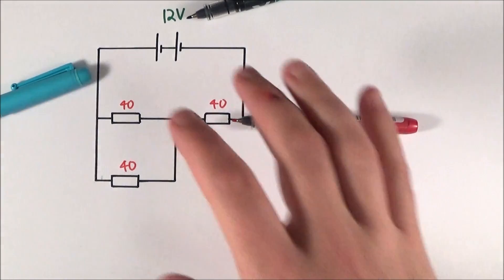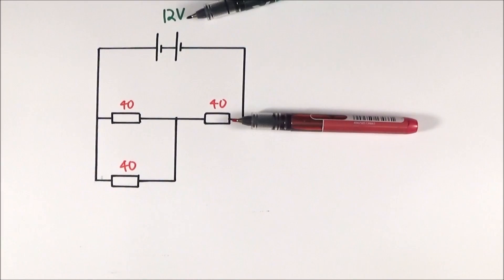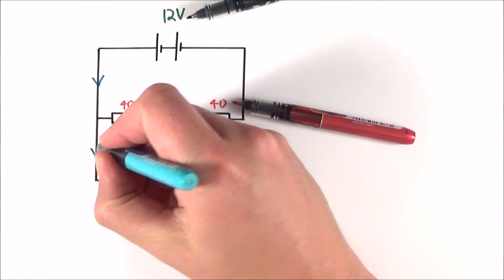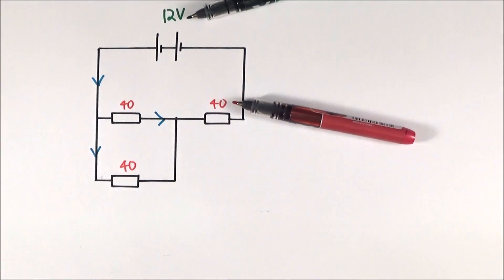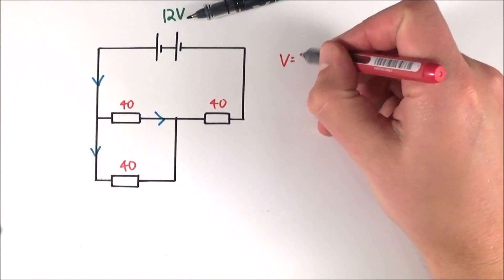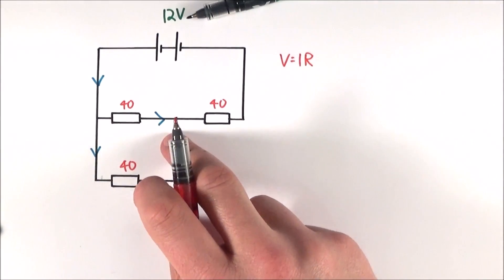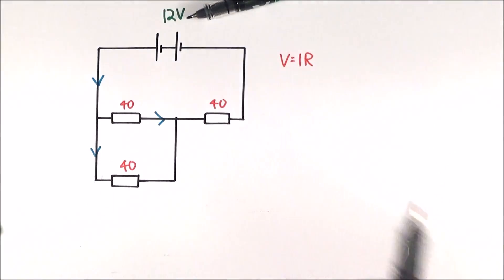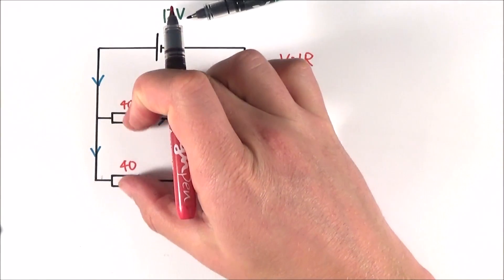I want to investigate the current in different parts of this circuit — the main branch and also the two branches in the parallel section. To do that, I'll use V equals IR, and I first need to find the total resistance of the whole circuit. I need to consider that two of the resistors are in parallel, so I'll find their combined resistance.